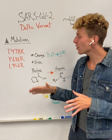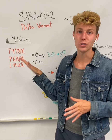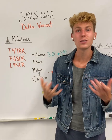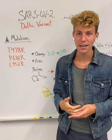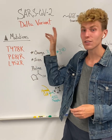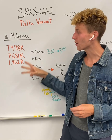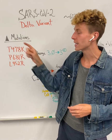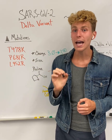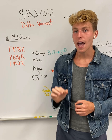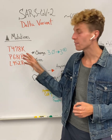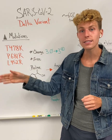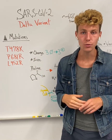I've already talked about how to read these mutations in the previous video that you can find on my page, but it's important to note that for the Delta variant, there are three mutations that occur on the spike protein that are of high importance, because these affect the charge and the size of the amino acids that have been mutated.